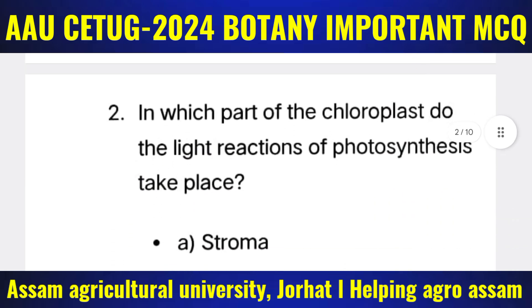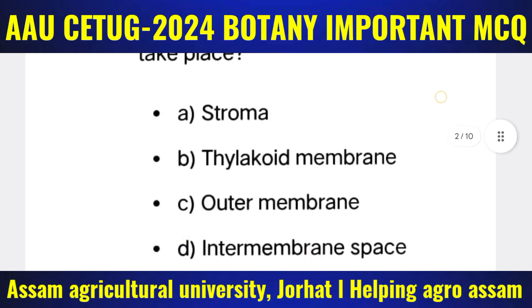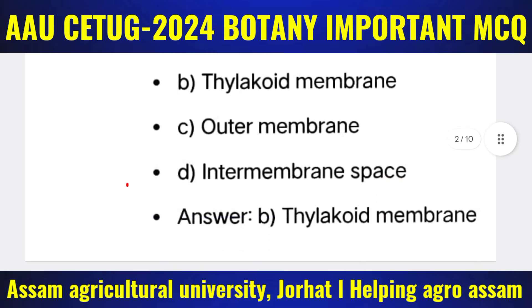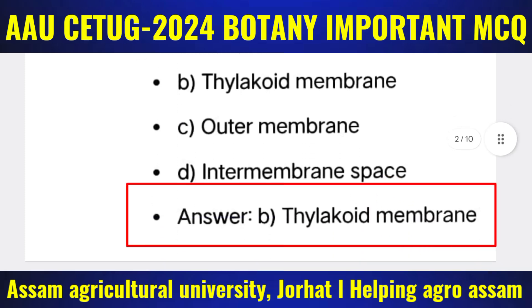Next question: In which part of the chloroplast do the light reactions of photosynthesis take place? The options are: (a) Stroma, (b) Thylakoid membrane, (c) Outer membrane, (d) Inter-membrane space. The correct answer is option B — Thylakoid membrane.